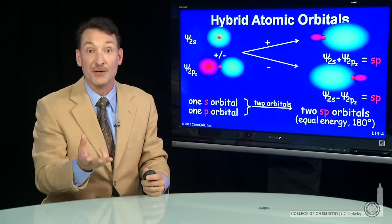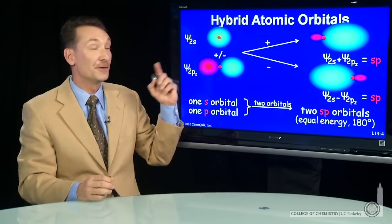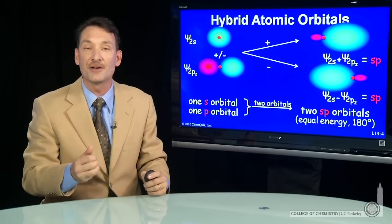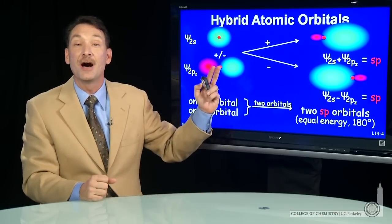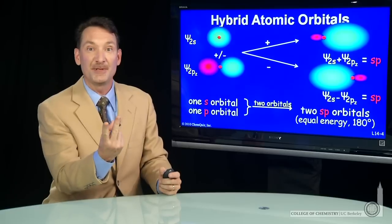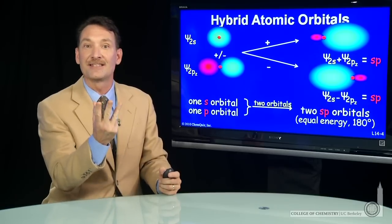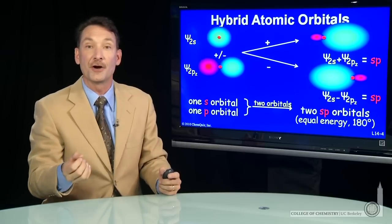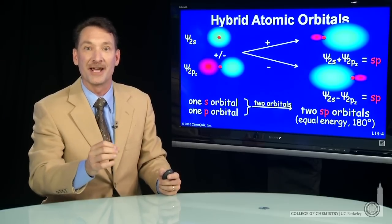I still have my remaining P orbitals that I didn't use. I used the Pz, so the Px and the Py are still available. But I have a new set: two SPs and a Px and a Py. Those are the atomic orbitals that are appropriate for a 180-degree bond angle.